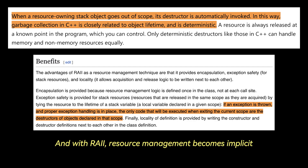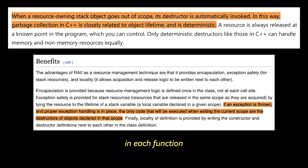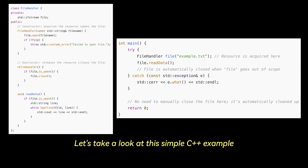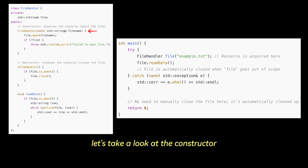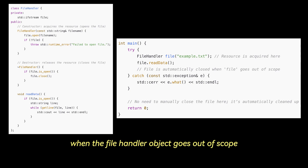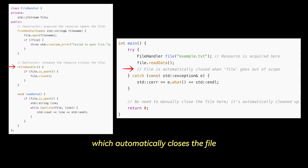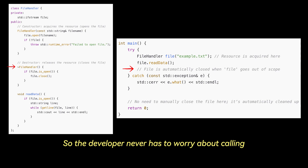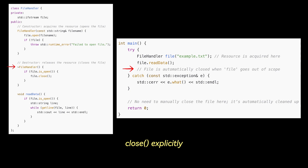With RAII, resource management becomes implicit — you no longer have to write complex cleanup code in each function or worry about managing resources manually. Let's take a look at a simple C++ example that demonstrates RAII. When the file handler object is created, the constructor opens the file. And when the file handler object goes out of scope at the end of main, its destructor gets called, which automatically closes the file. The developer never has to worry about calling close explicitly, as the resource is automatically released when the object is destroyed.